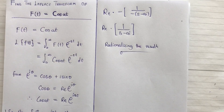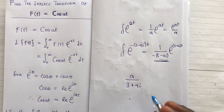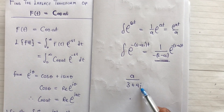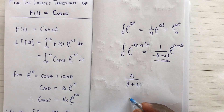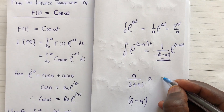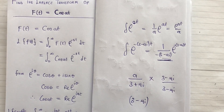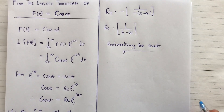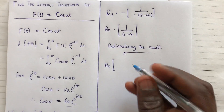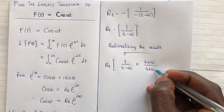Now we rationalize the result. For complex numbers, if you have something like a over (3 + 4i), you multiply numerator and denominator by the conjugate (3 minus 4i). Applying the same step here: the imaginary part of (s minus a·i) has sign minus, so the conjugate is (s plus a·i). We multiply 1 over (s minus a·i) by (s plus a·i) over (s plus a·i).